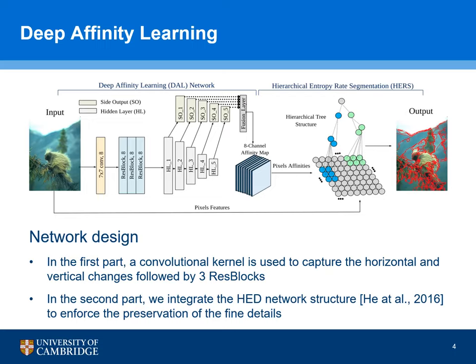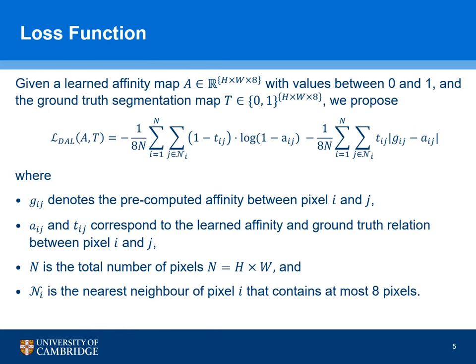In the second part, we integrate the holistic edge detection network structure to enforce the preservation of boundary details and fine detailed information in an image. To train the designed network, we propose a loss function consisting of two terms. The first term encourages the learned affinities to be as close to the ground truth affinities as possible for the boundary pixels, and the second term encourages the learned affinities to be as close to the precomputed affinities as possible for all non-boundary pixels. We compute the loss between each pixel and all of its at most eight neighbors.